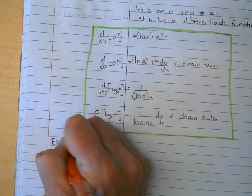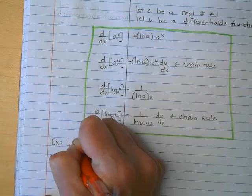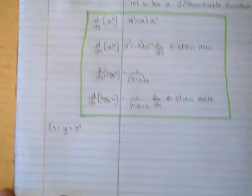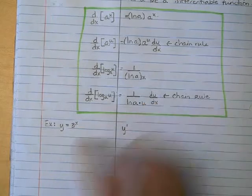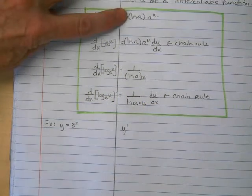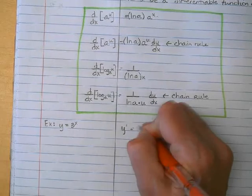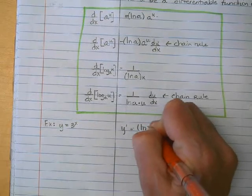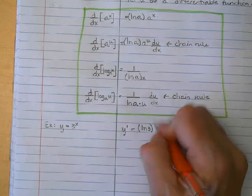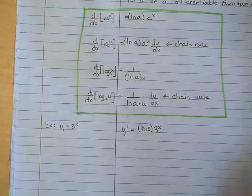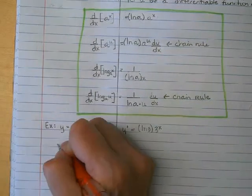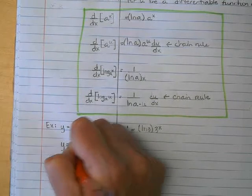Let's look at a bunch of examples. Let's say we have y equals 3 to the x and we want the derivative of that. This is this type right here, so we're going to get natural log of 3 times 3 to the x, and that's it.